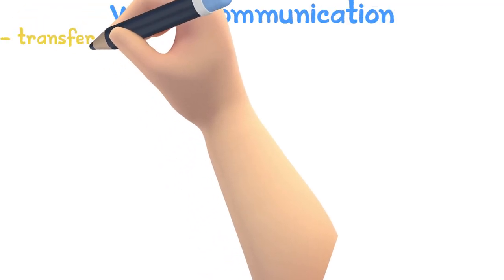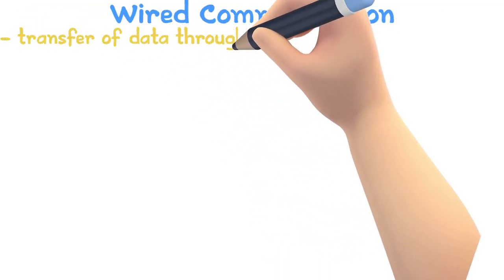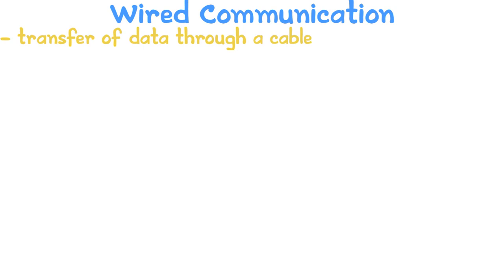Wired communication involves the transfer of data through a cable. There are many types of wired communications, and two of the most prominent ones are USB and Ethernet. Let's take a look at both of them.